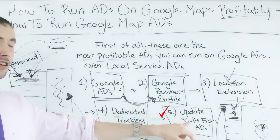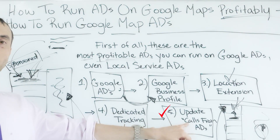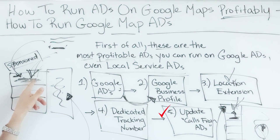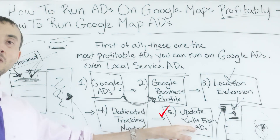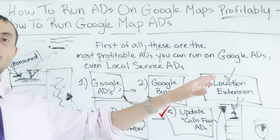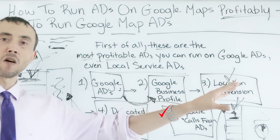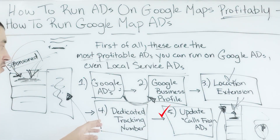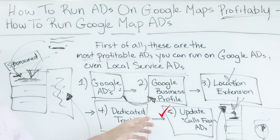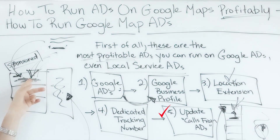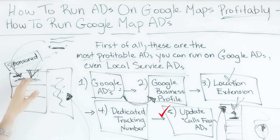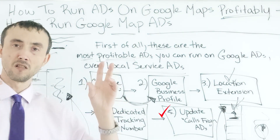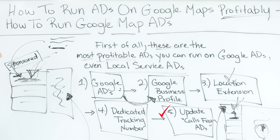There's a section called 'calls from ads' in your Google Business Profile where you put the tracking number specifically for calls from sponsored map listings. I also recommend having a separate tracking number for the main phone number on your Google Business Profile so you can see in Call Rail how many calls you got organically versus from the sponsored listing.